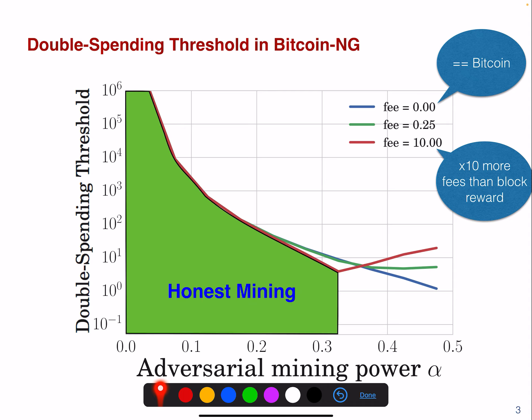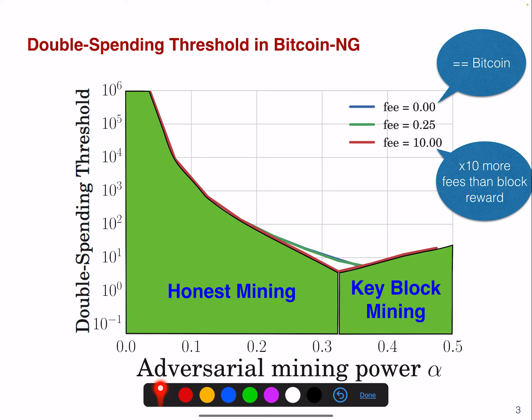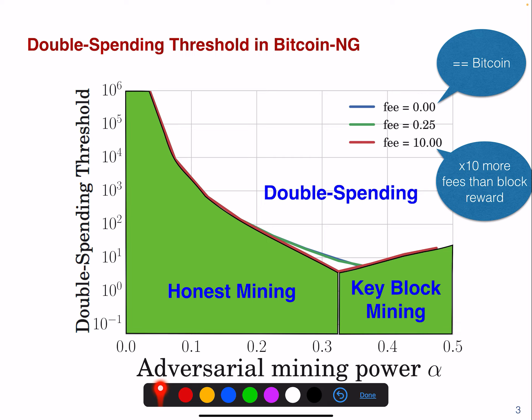What our MDP shows us is that this is the surface in which honest mining is the default behavior of a rational agent. After 33% hash rate, we find that the miner will likely start mining on the key block.